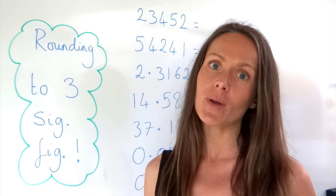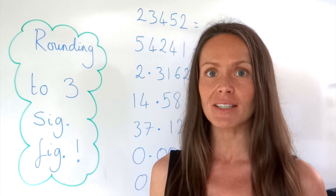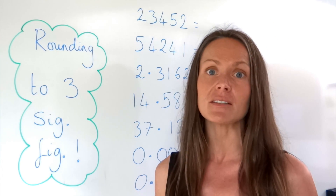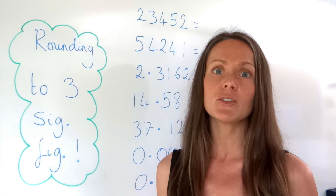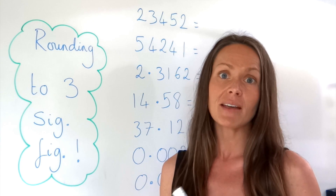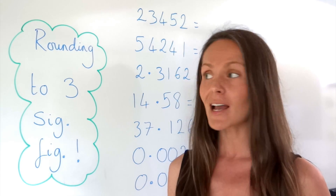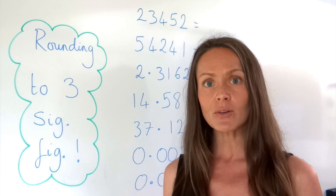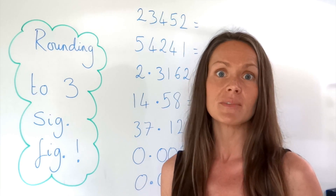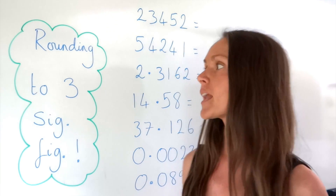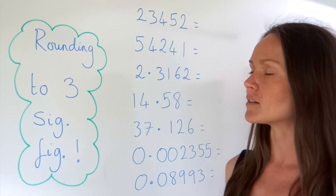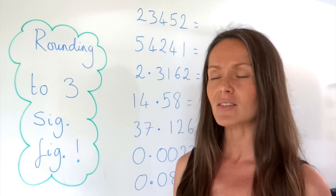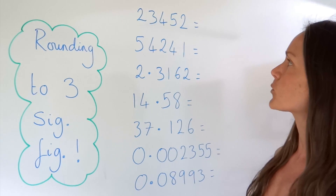Hi there. A few people have requested that I cover the topic of rounding, so today I'm going to talk you through rounding to three significant figures. This is something you have to do all the time when doing maths calculations. In your exam questions, they'll ask you to round in a certain way, so if you don't know how to round, you might lose some significant marks. When we're rounding to three significant figures, it means we want to have three real numbers in our answer. Let's have a look at the first question.